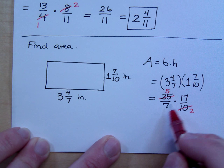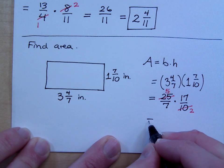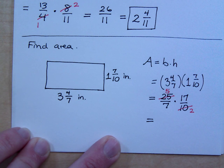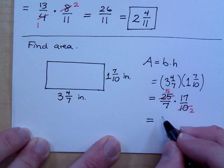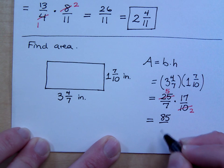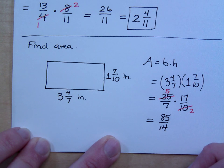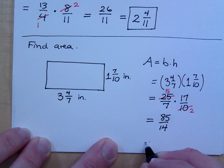Kind of cross out the 7s? That's a joke. Don't do that. So what's 5 times 17? So we have 85 over 2 times 7 is 14. Alright, so let's go back to a mixed number. 14 goes into 85. How many times?